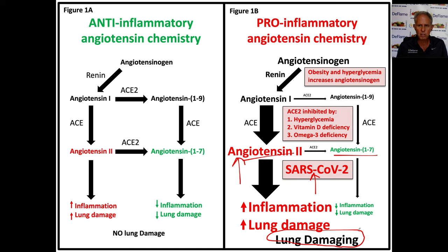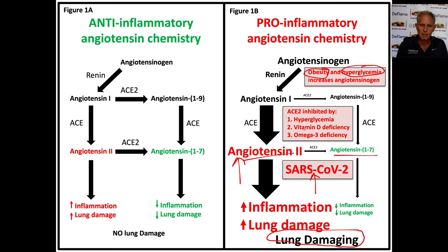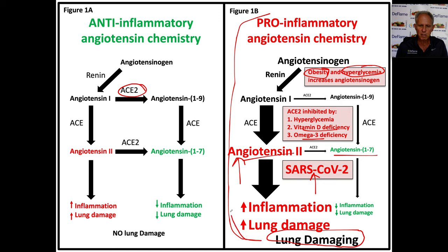So what should one do? The big message should be: reduce your obesity, reduce your hyperglycemia, become vitamin D adequate, omega-3 adequate. We can't change aging, but we can do everything we possibly can to keep our ACE2 enzyme operating properly. Instead, public health messaging focuses only on social distancing, wearing masks, and waiting — while millions of Americans are living in a pro-inflammatory state that is fertile ground for a really bad outcome from SARS-CoV-2 infection.